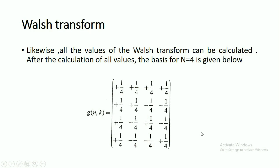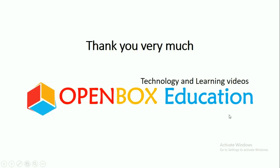Like this, all values of the Walsh transform can be calculated. After calculating all the values, the basis matrix for N=4 is obtained as the matrix g(n,k). This is about the Walsh transform. Thank you very much for watching this video. To watch more videos, please subscribe to my channel, Open Box Education.